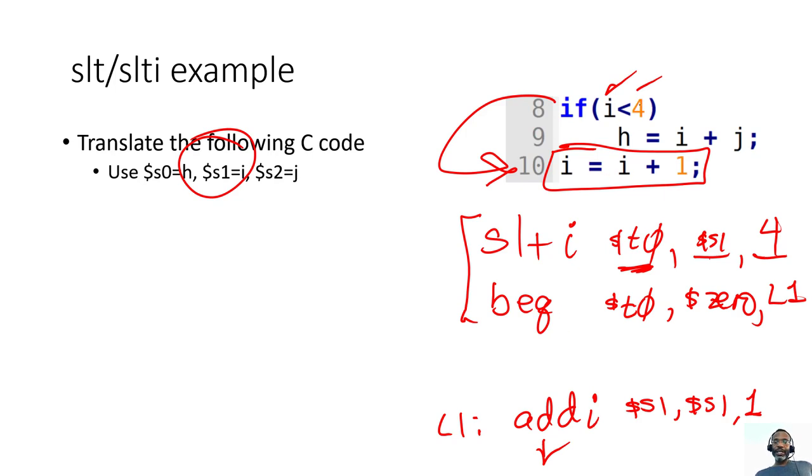So if i is not less than 4, we just simply want to branch. Otherwise, we want to do the addition. And so that addition is h equals i plus j, which is s0, s1, and s2.